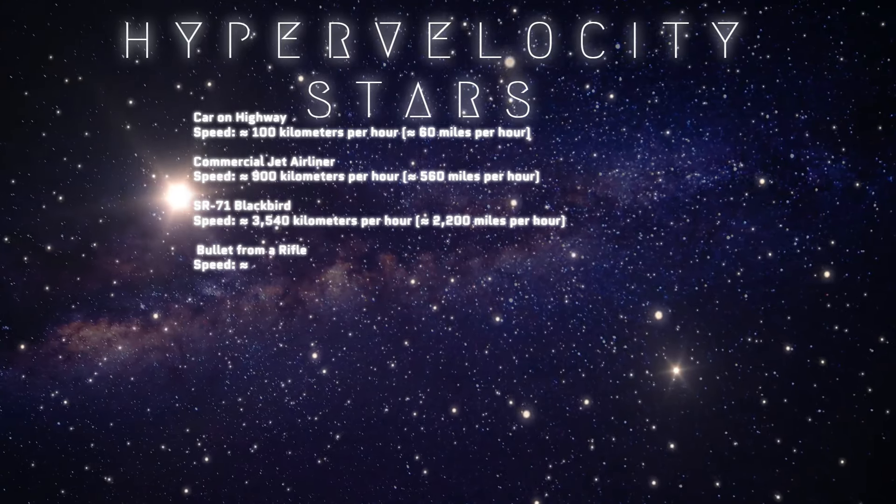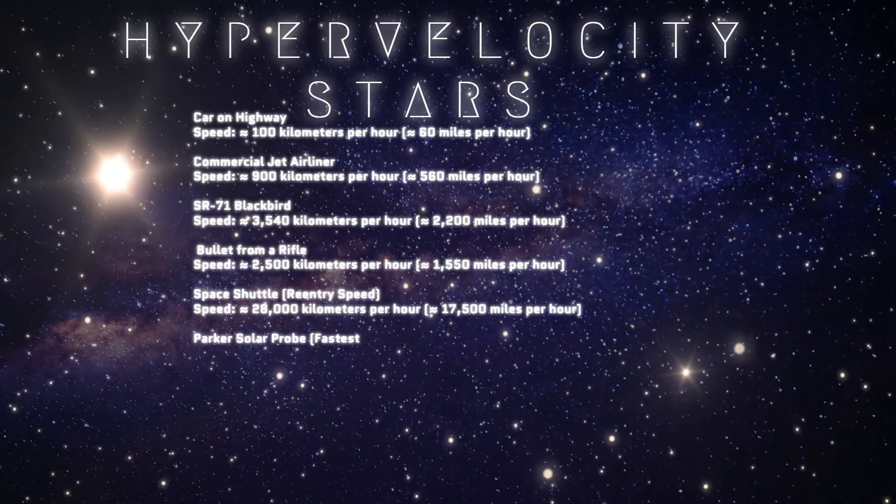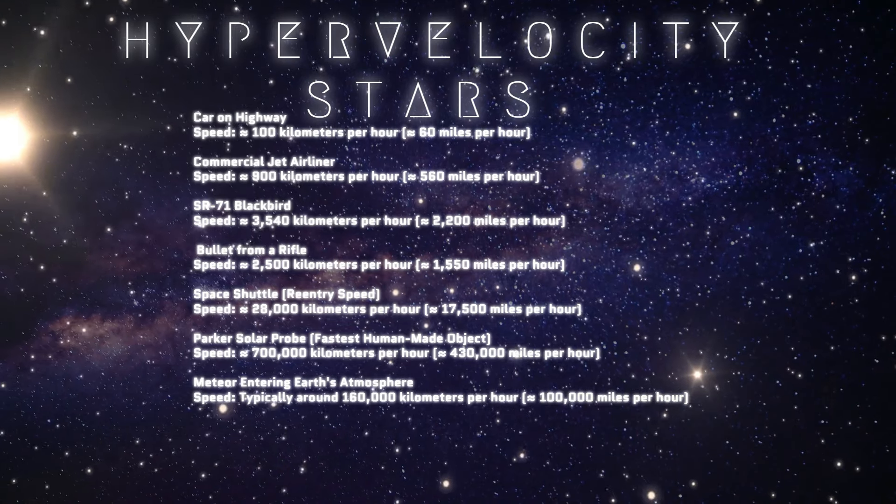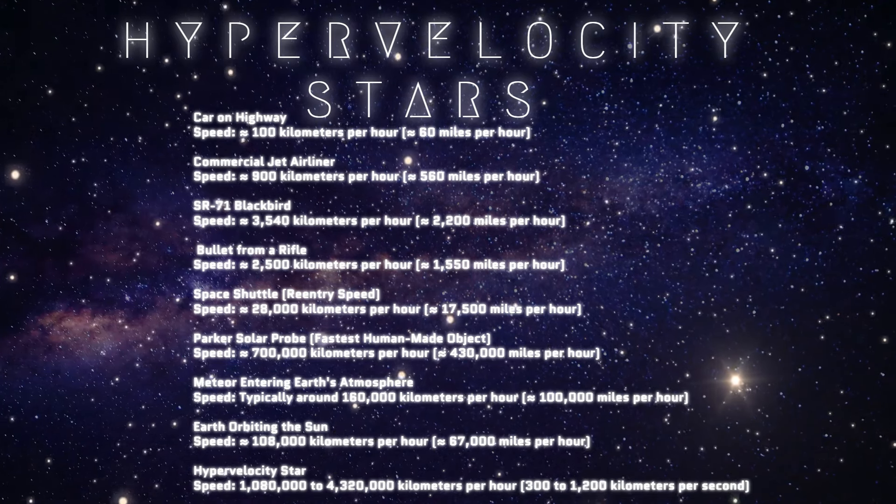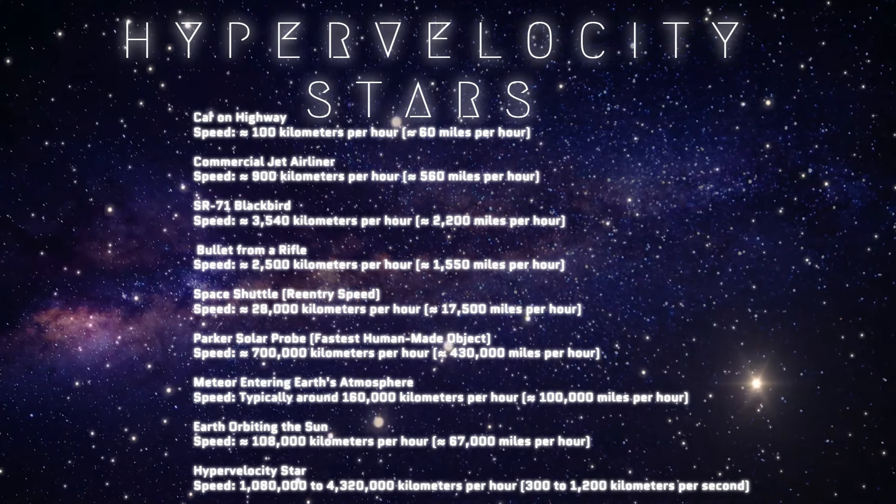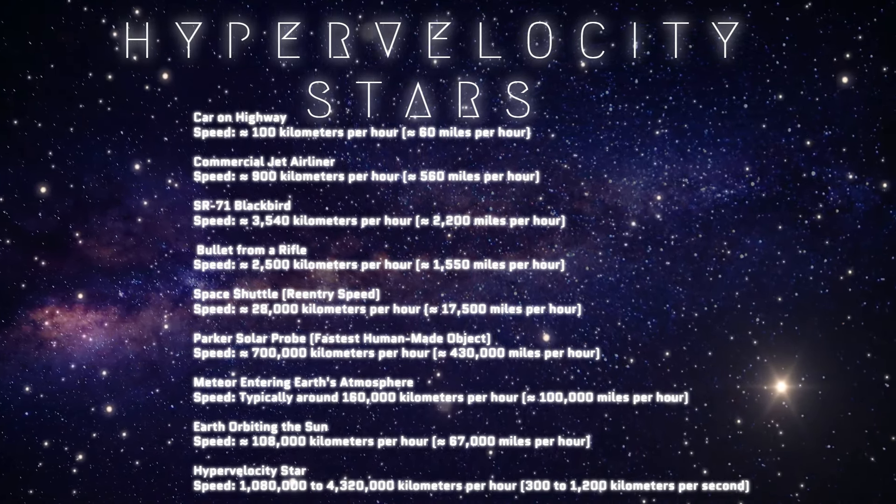The actual speed of a hypervelocity star can vary widely, but typically these stars travel at speeds ranging from 300 to 1,200 kilometers per second. To put this into perspective, that's fast enough to travel from Earth to the Moon in about 6 to 25 minutes.